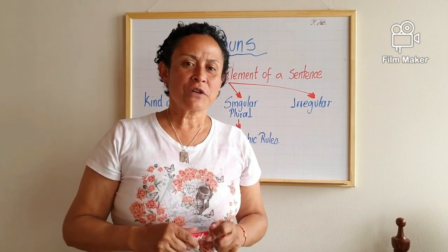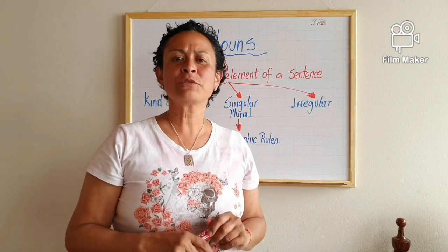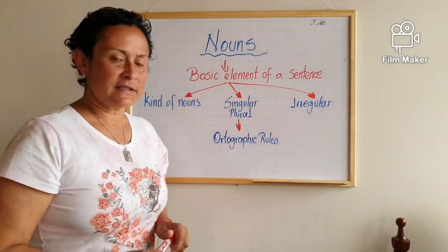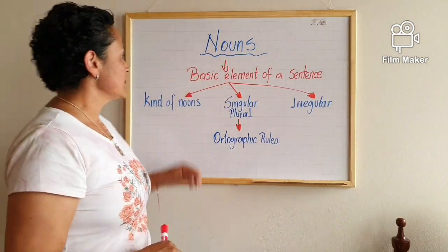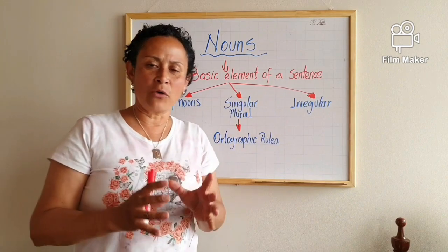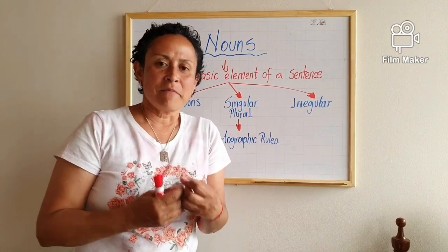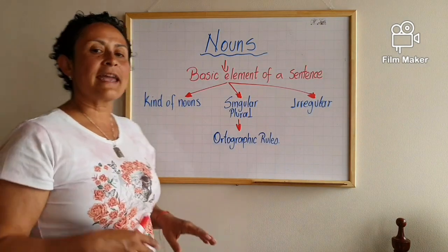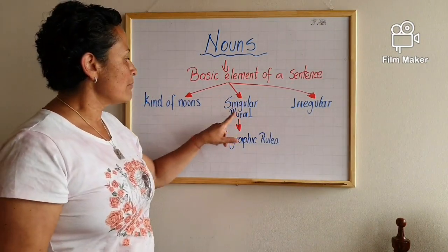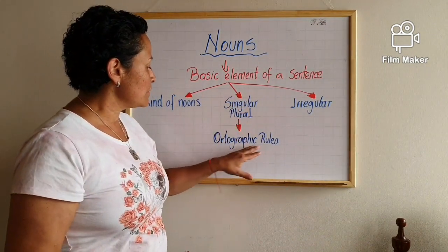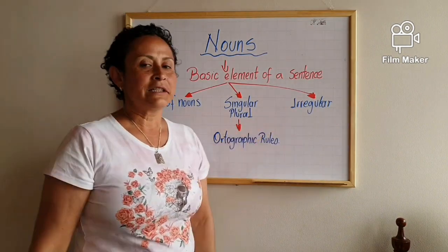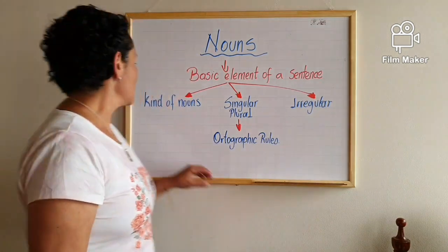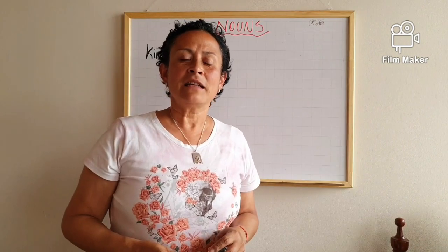Good afternoon. This is the turn to talk about nouns. Remember that in one class we were talking about adjectives — well today we're going to talk about nouns. Take a look at this graphic. The definition of a noun is a basic element of a sentence, which means that a noun is quite important and that in every sentence you're going to find a noun. We'll cover kinds of nouns, singular and plural forms, orthographic rules, and irregular nouns.